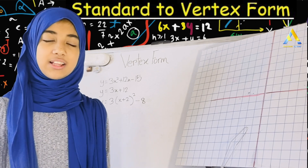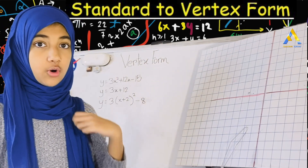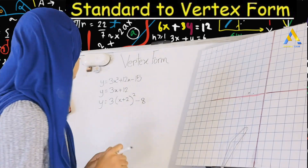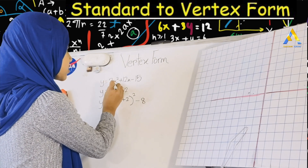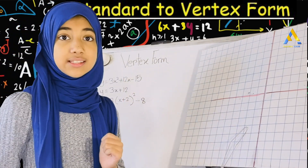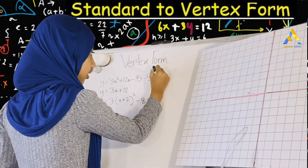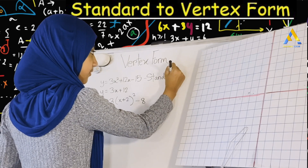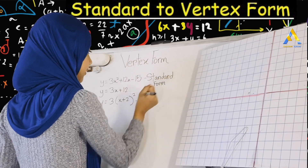Assalamualaikum dear viewers. Inshallah today I will show you the vertex form, but before that I want to show you three equations. My first equation is y equals 3x squared plus 12x minus 15. When you see this, this is the standard form. I think I showed you this before, but let me just explain it to you real quick one more time.